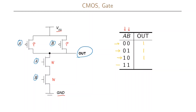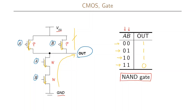Moving to the last row where both A and B equal one: for the P-type transistors, none of them will be conducting, while both N-type transistors will be conducting. So we have a short circuit between the ground and the output, giving an output of zero, and there is no connection between the voltage supply and the output. Looking at our truth table, what we have implemented with these four transistors is a NAND gate. A two-input NAND gate requires four transistors: two P-type and two N-type.